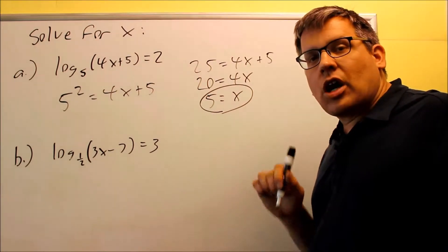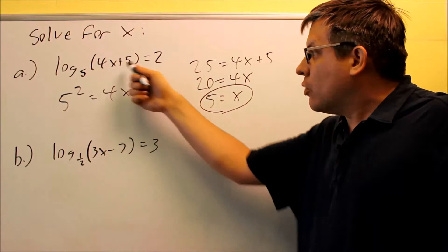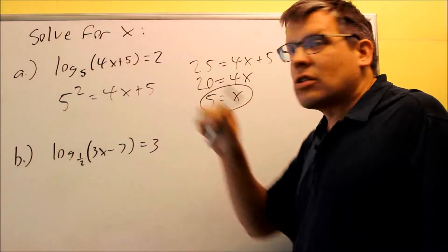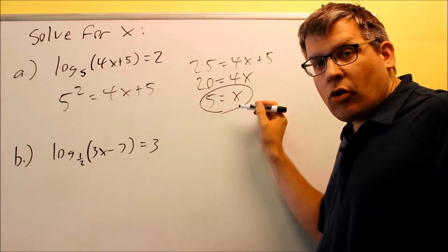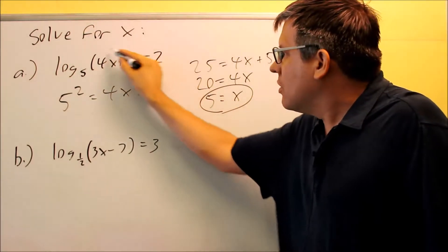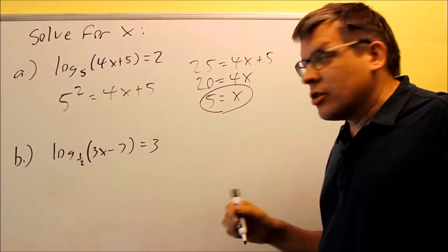Whenever you do log equations, it's very, very important, make sure you check your answer in the original one to make sure you don't get a negative number inside. We know that we're not allowed to take the log of a negative number. Now does this mean that your x can't be negative? No it doesn't mean that. It means that when you put the answer into the expression inside the parentheses, you don't want to get a negative or a zero.